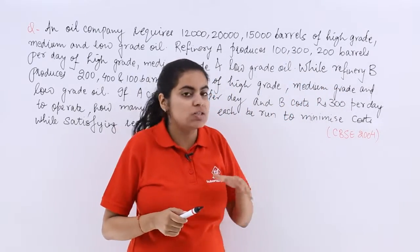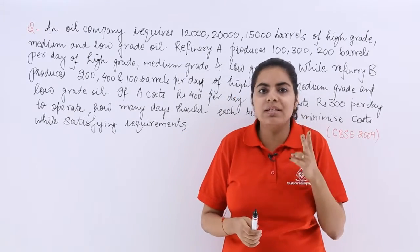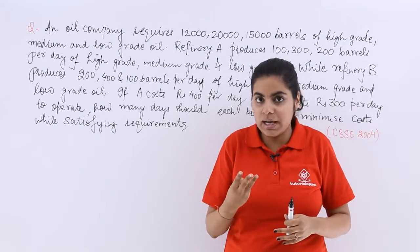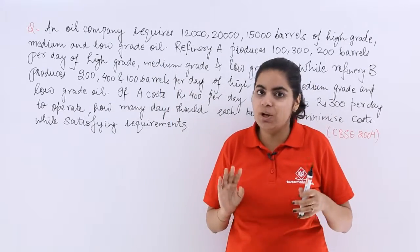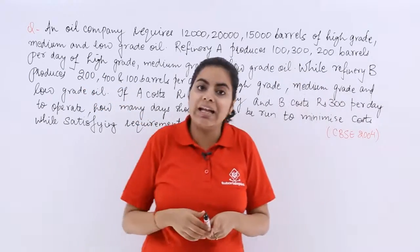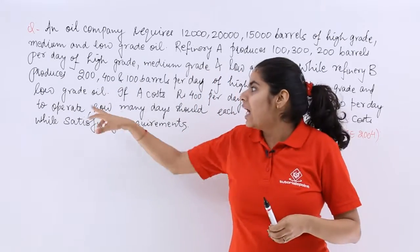While refinery B, so as you know, till now we have known that there are two refineries, refineries A and B and there are three kinds of oil: high, low and medium grade oil. So refinery B produces 200, 400 and 100 barrels respectively of high grade, medium grade and low grade oil.